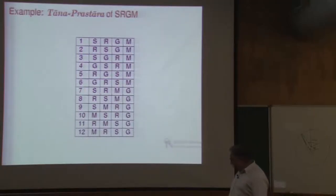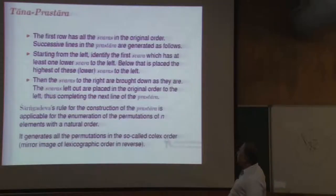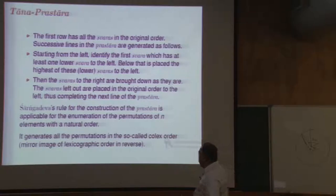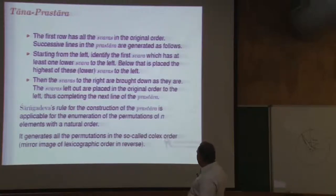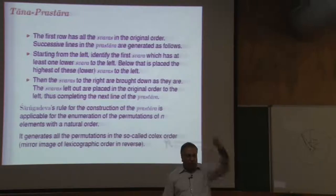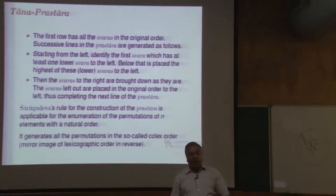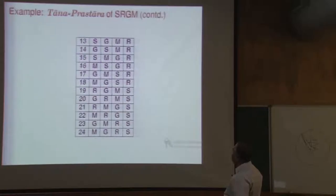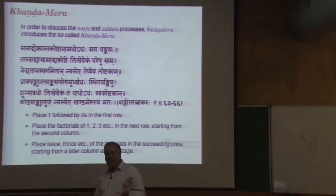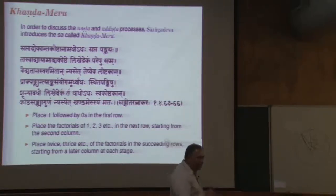This rule that Sangadeva gave for this algorithm is applicable to enumeration of permutations of N elements which have a natural order. It is also applicable for permutations of elements with repetitions — for example, if you have a collection like Sa Sa Ga Ga Ga and want to permute them. It generates all the permutations, and in modern language it is called co-lexicographic order. A correct rule for permutation enumeration was discovered outside India only in 1784 by Hindenburg, who also had to experiment with many examples; Mersenne was one of the persons very seriously concerned with this problem.